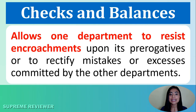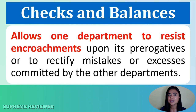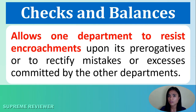This principle allows one department to resist encroachments upon its prerogatives or to rectify mistakes or excesses committed by the other departments. The fact that the three great powers of government are intended to be kept separate and distinct does not mean that they are absolutely unrestrained and independent of each other. The Constitution has also provided for an elaborate system of checks and balances to secure coordination in the workings of the various departments of the government.